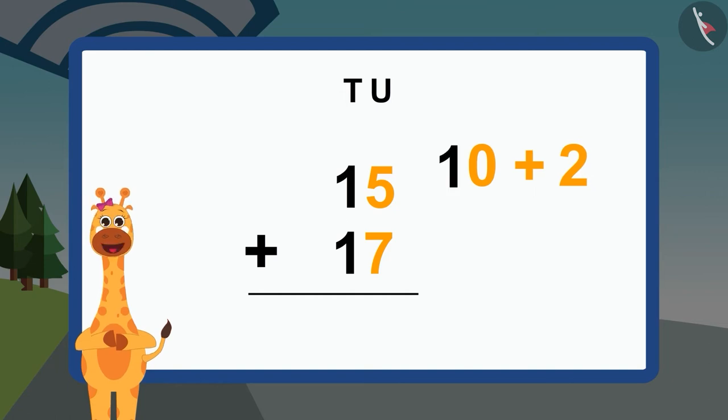I will write 1 from the number 12 like this on the top of the 10 section. Then, I will write the number 2 from the 12 under the unit section like this.